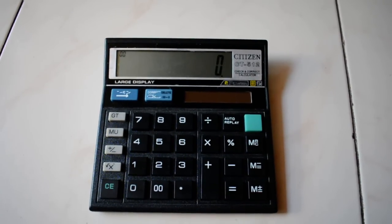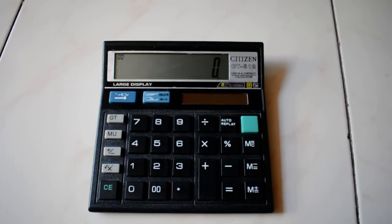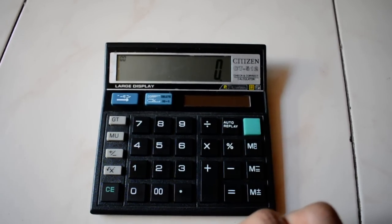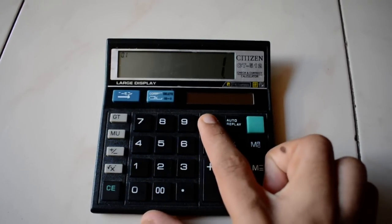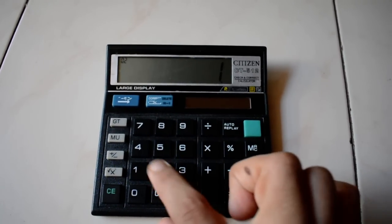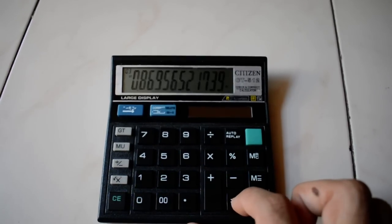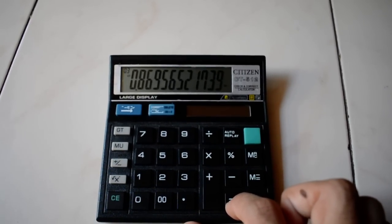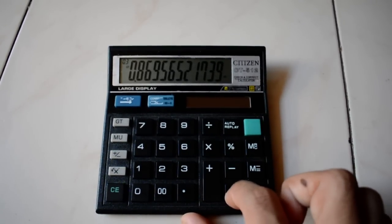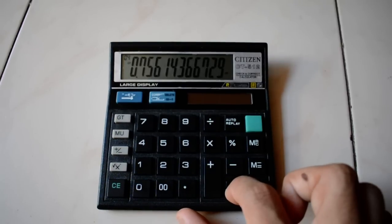Let us take another example. Suppose I want to find the factor of 15%. What I will do is I will press 1 divided by 1.15, equal to. This is the present value factor of the first year, for the second year, third year...